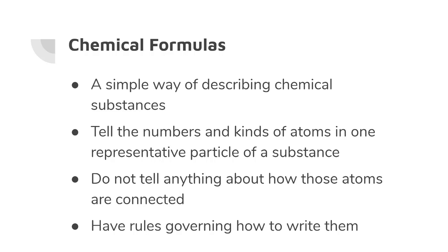The first thing is that a chemical formula is a simple way of describing a chemical substance. It should tell you the number and kinds of atoms in one representative particle of a substance. Now, representative particle is a term that we use that's sort of general. There are specific names for these particles. You already know some of them.